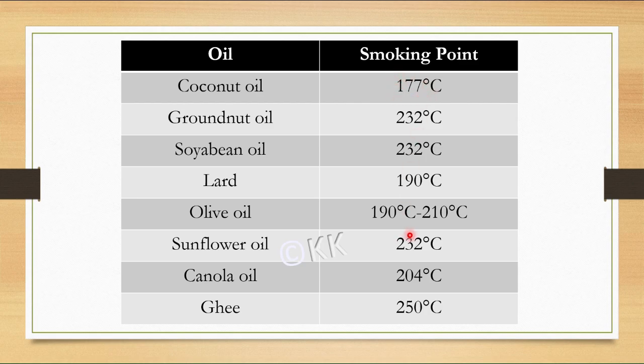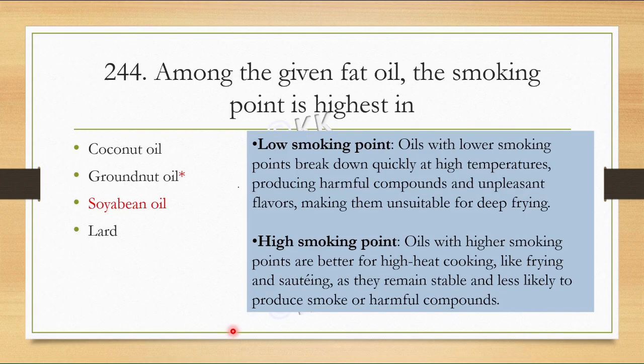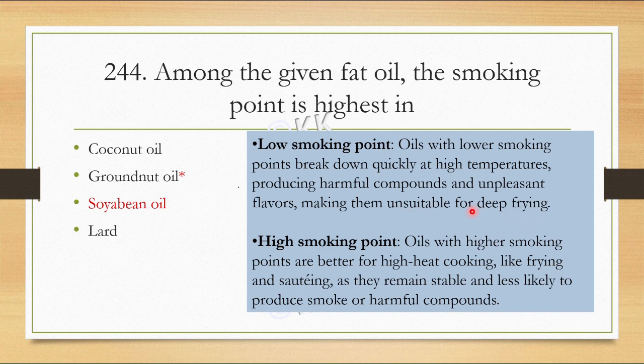Low smoking point oils are generally not used in salads or at high temperature because they can be damaged quickly and produce unpleasant flavor. High smoking point oils like soybean oil are generally used for frying and sauteing. When we heat them, fewer harmful compounds are produced.